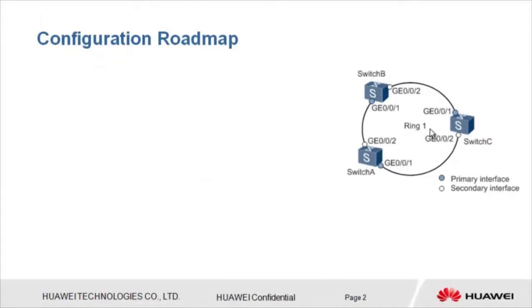The networking on the right is used as an example to describe the RRPP configuration roadmap. Switch A, Switch B, and Switch C constitute a ring network.